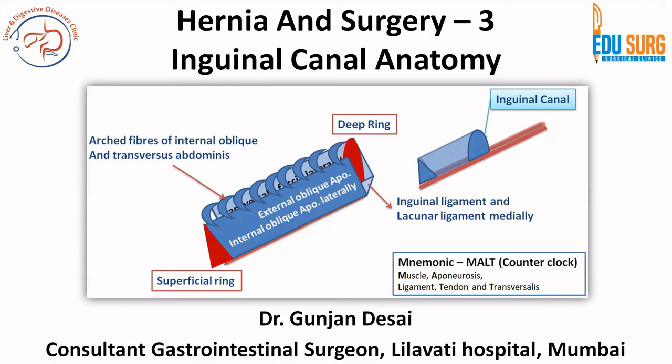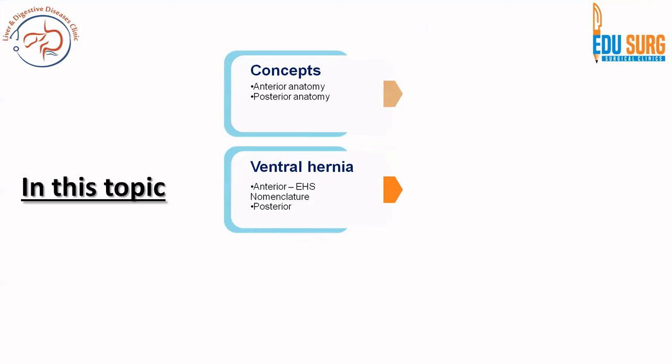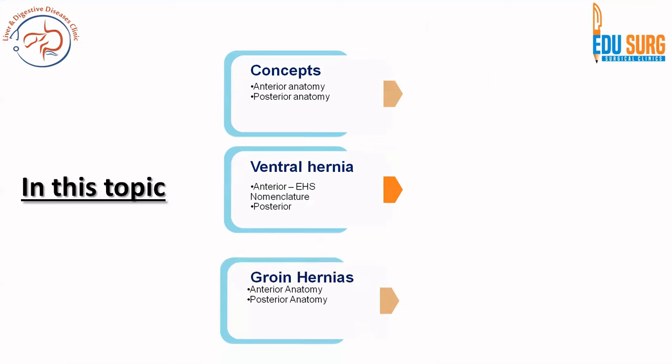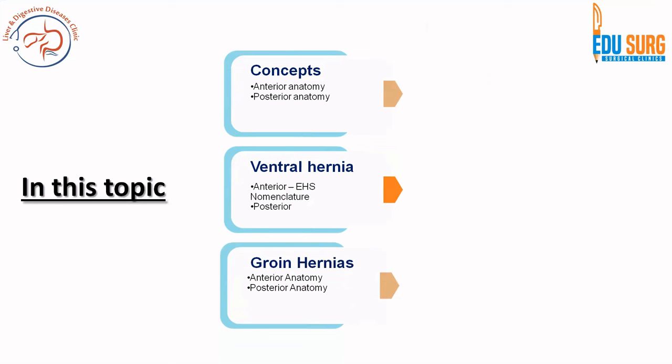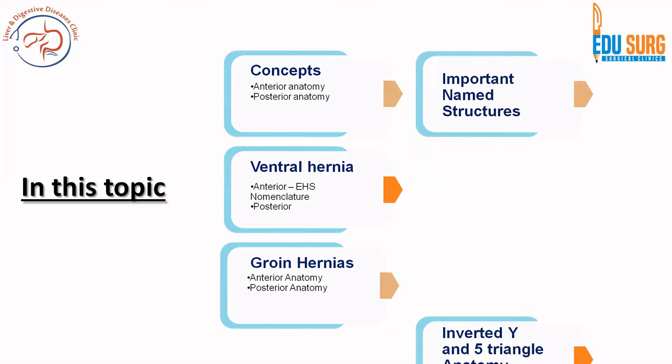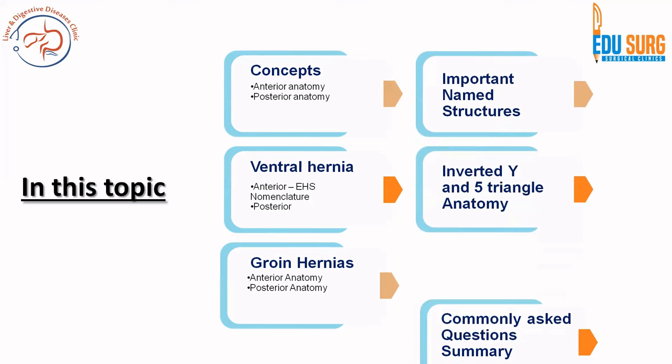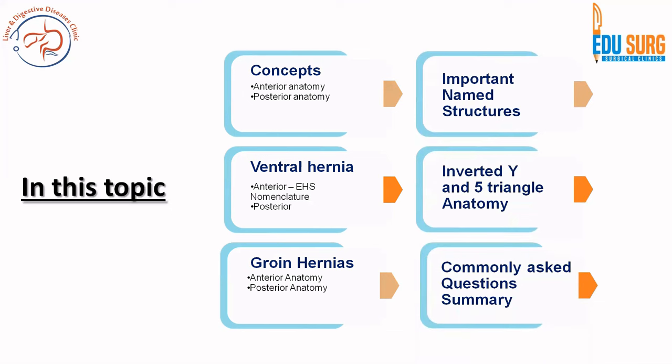Hello everyone and welcome to EduSearch Clinics. This is the third part of our series on hernia anatomy and its applied aspects. We already saw the anterior and posterior anatomy concepts, the European Hernia Society nomenclature or classification of the ventral hernia, and some important surface landmarks and orientation about the inguinal canal and femoral canal in the previous parts. Along the journey we are also looking at important named structures and we are moving towards the Furtado classification.